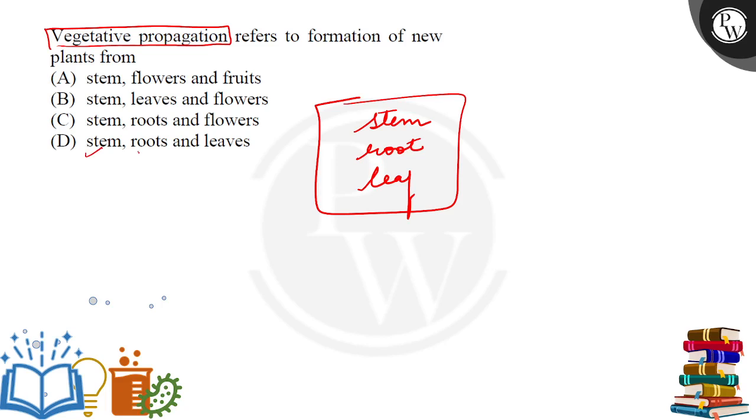What will happen here? Stem, root, leaf. Option D, stem, root, leaf will be the correct answer.